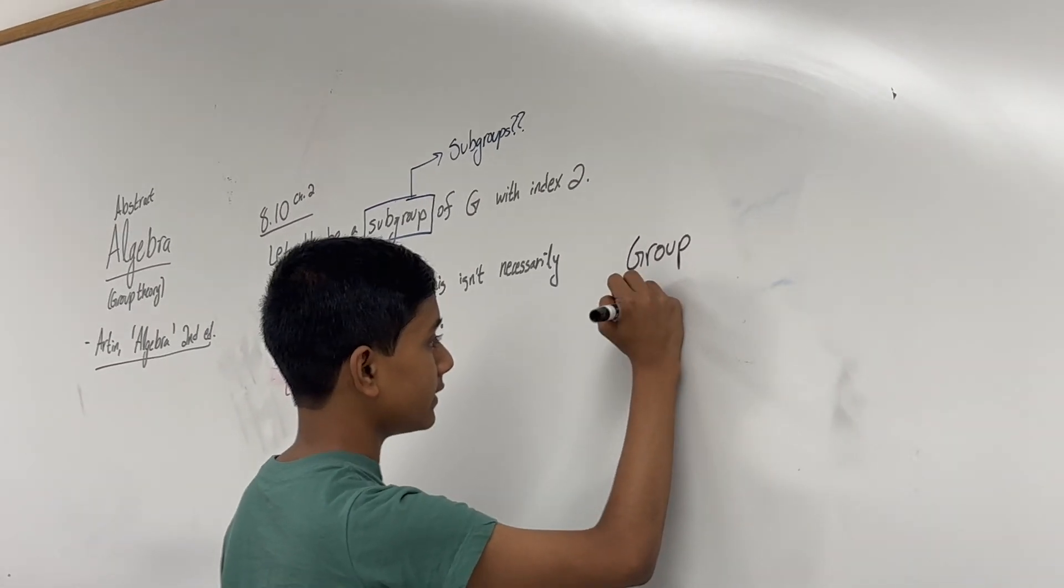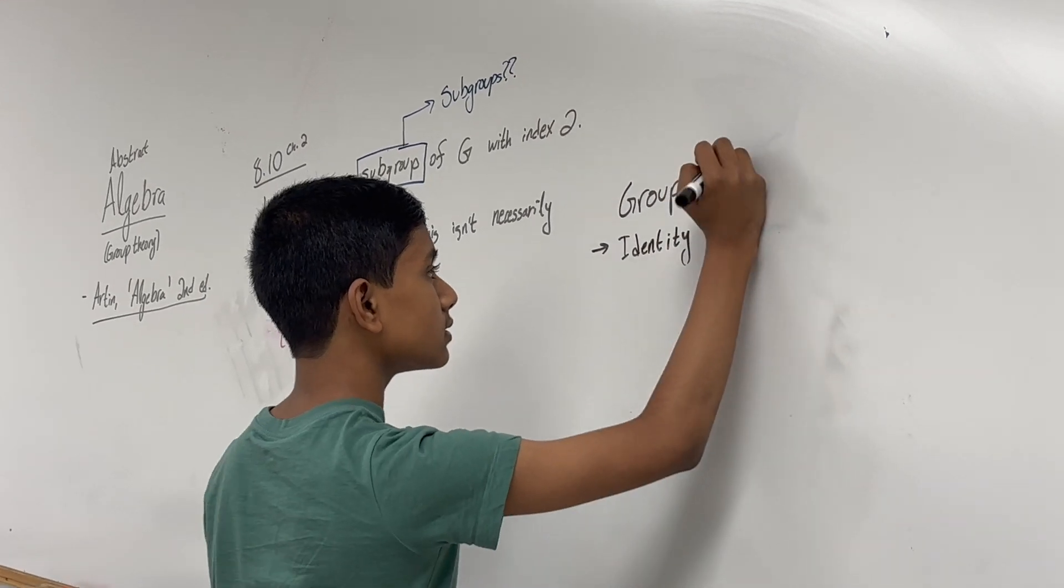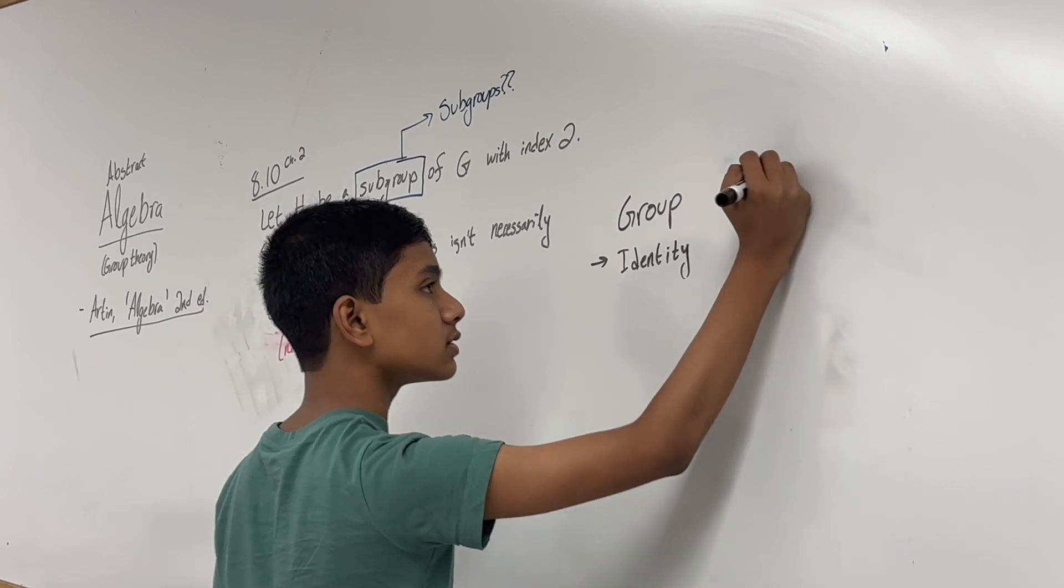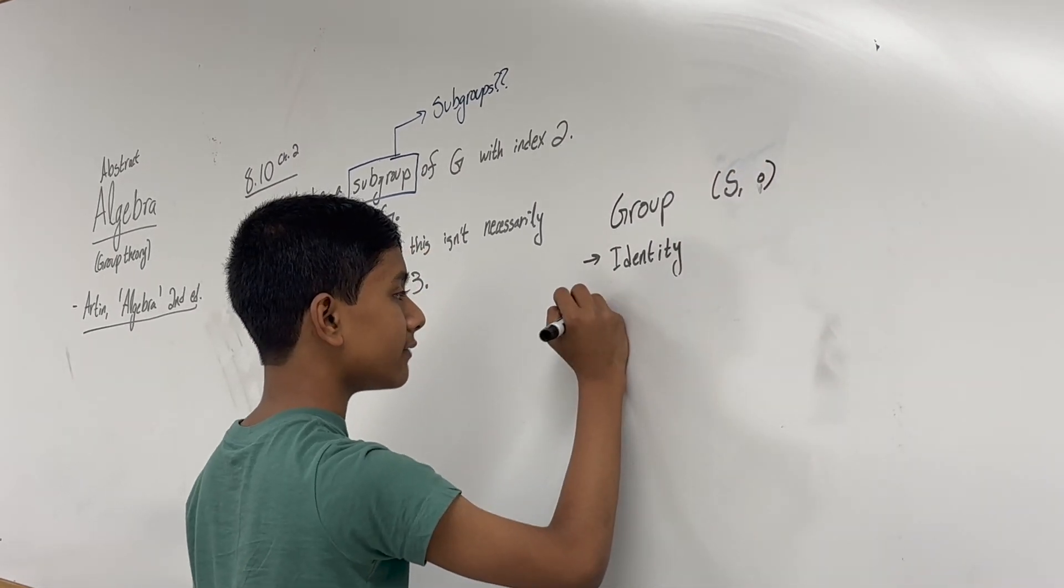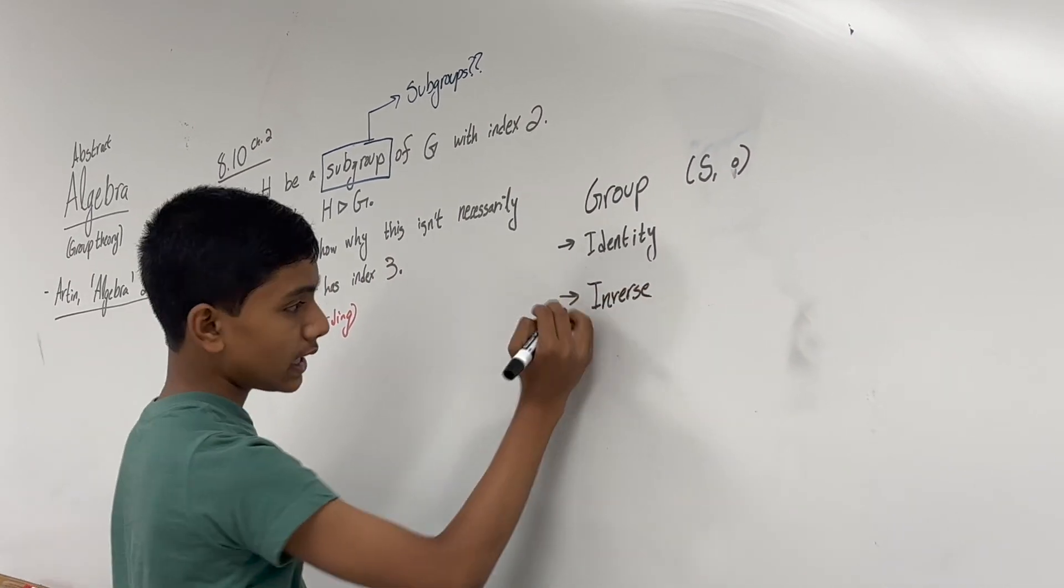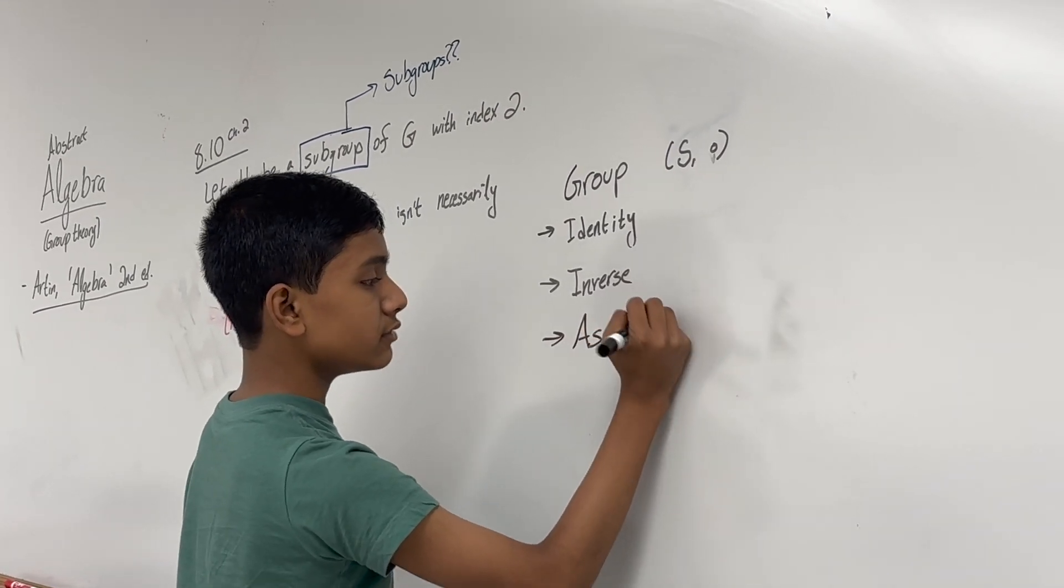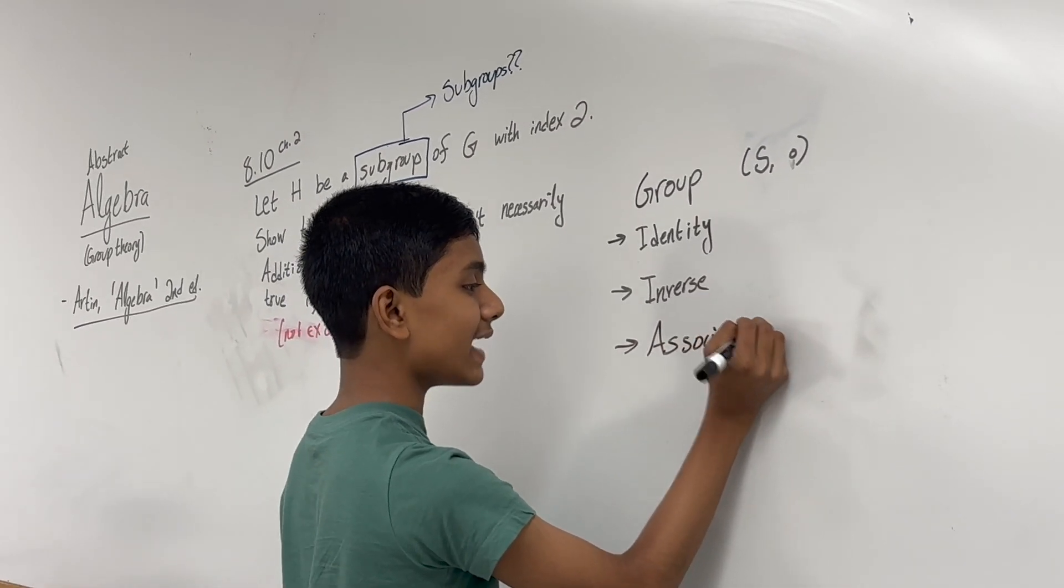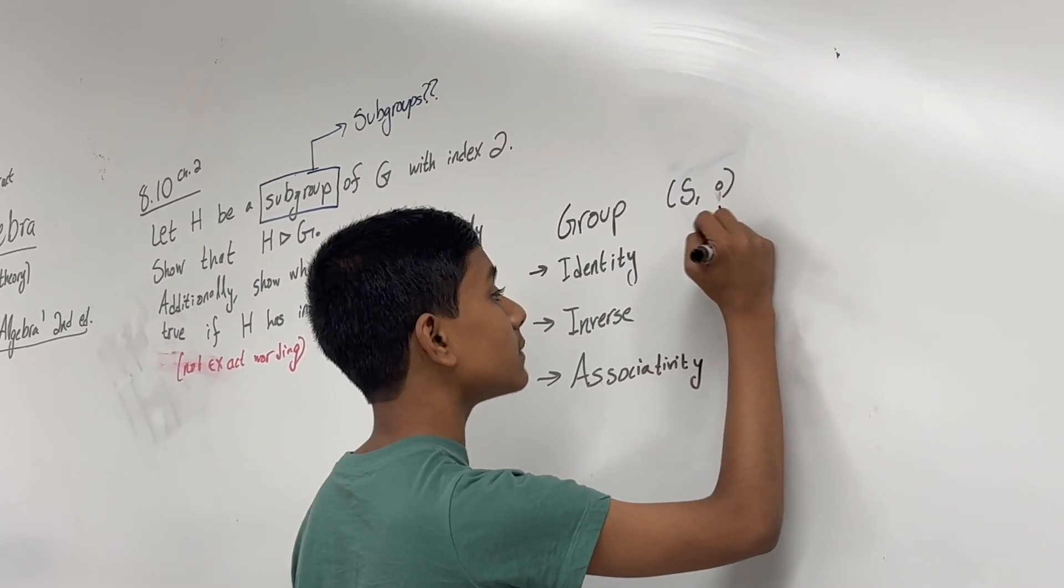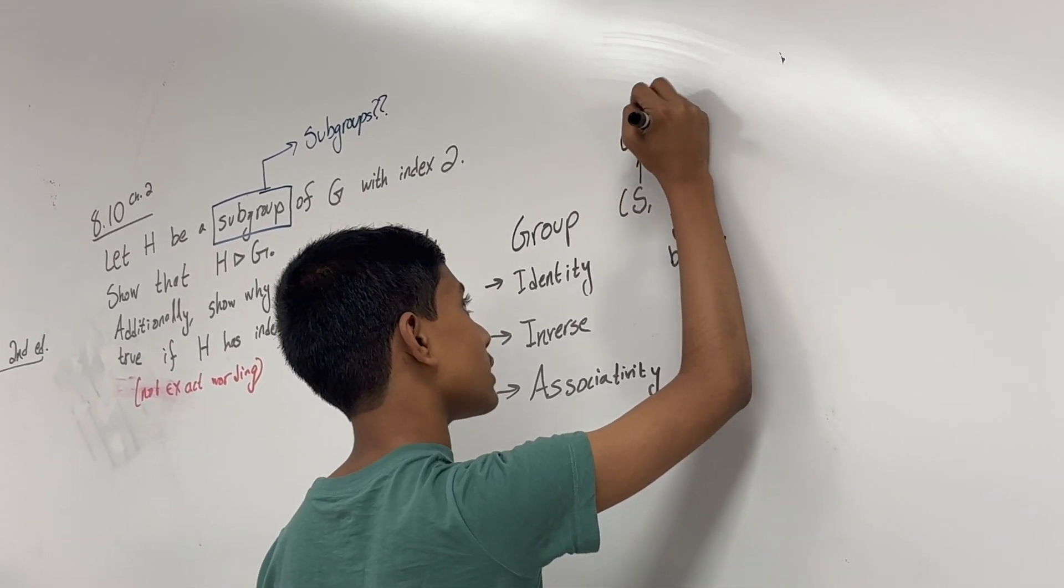It must have an identity under a specific operation, so a group is a set paired with an operation. It must have an identity, every element must have an inverse, and there must be associativity. The operation specifically has to be binary, and the set specifically has to be closed under the operation.